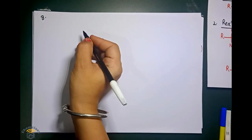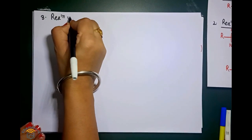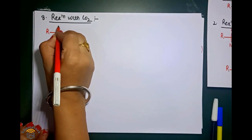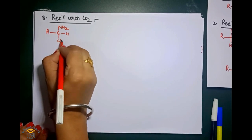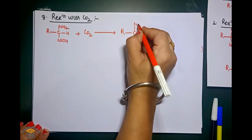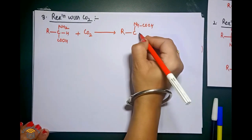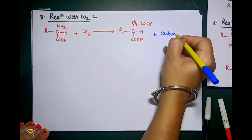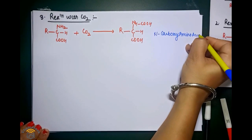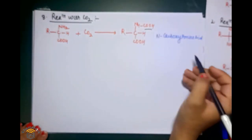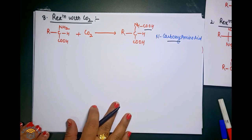The third reaction given by the NH2 group is the reaction with CO2. You take amino acid and when it reacts with CO2, the product R-CH(NH-COOH)-COOH is formed. This is known as N-carboxy amino acid. At the NH2 position, it reacts with CO2 and we get the N-carboxy amino acid.